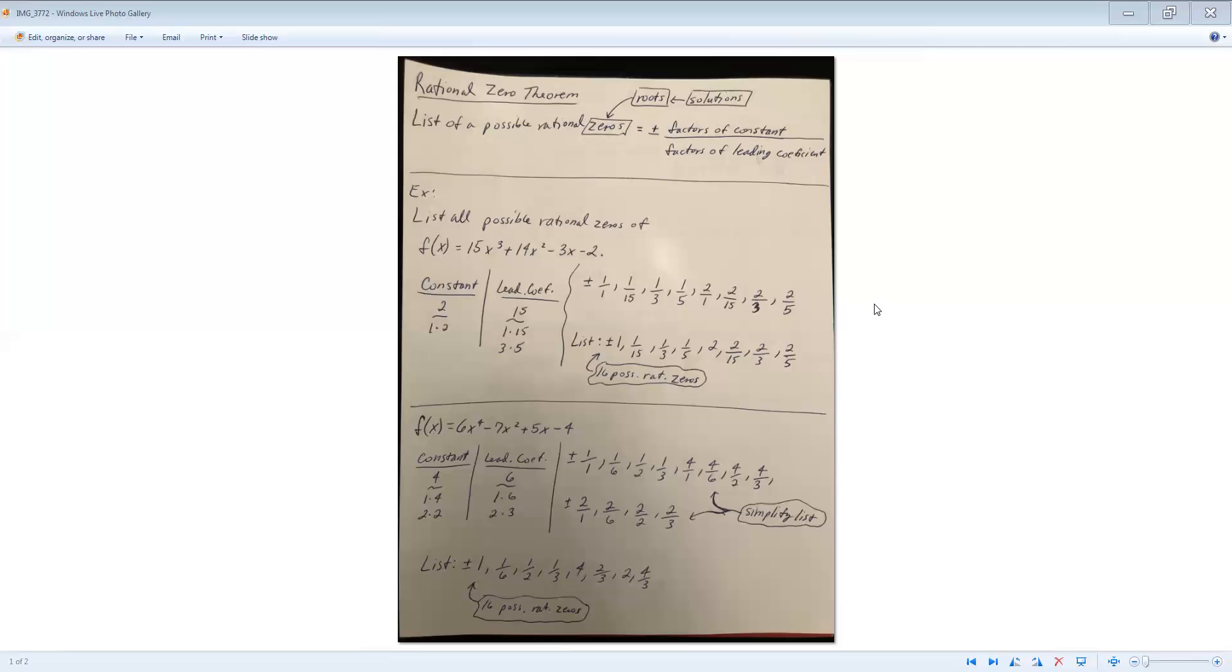You don't have to do 2 twice. Then we will simplify our list. Once we simplify our list, we will see that some of them would cancel out. For example, 4 over 2 is 2, 2 over 1 is also 2. So some of our terms will cancel out, and that will give me a list of 16 possible rational solutions once again.